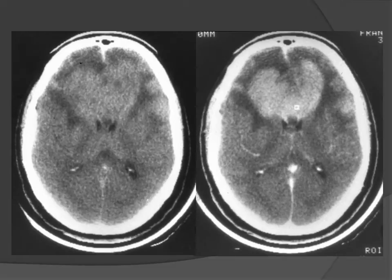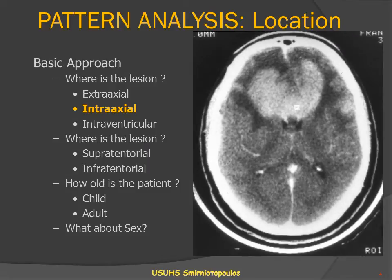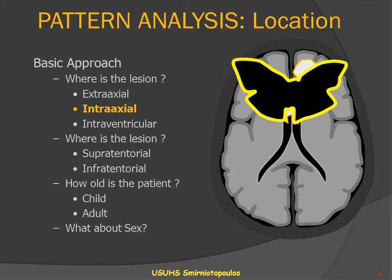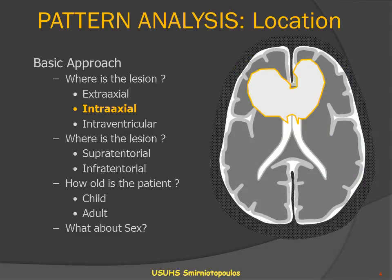Here we have, on these two CT scans, an example of a classic butterfly lesion. The non-contrast CT scan shows a fluffy, relatively homogeneous lesion of abnormally increased attenuation with some surrounding vasogenic edema. The same lesion demonstrates contrast enhancement. In the basic approach to the lesion location, we can identify that this is intraaxial and it is within the corpus callosum, spreading from one side to the other. This is the classic appearance for an infiltrating neoplastic process, such as primary CNS lymphoma or glioblastoma multiforme, both of which are well known to be butterfly lesions.